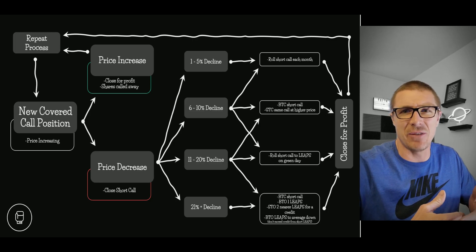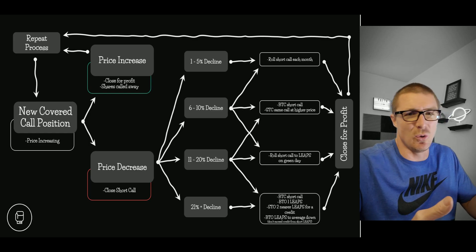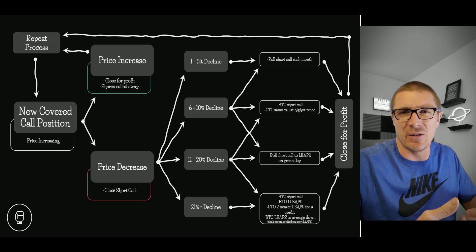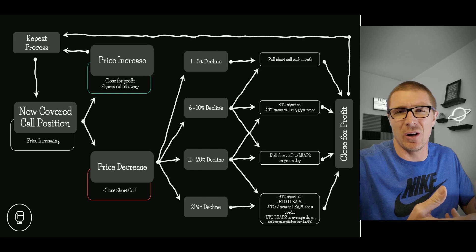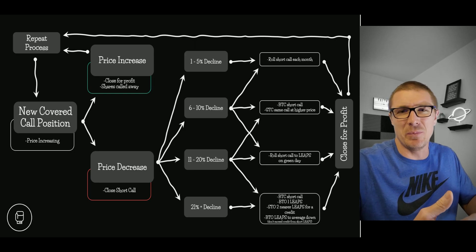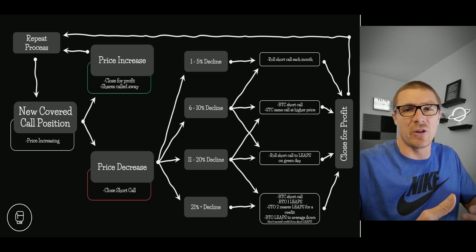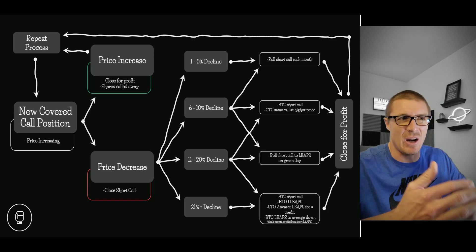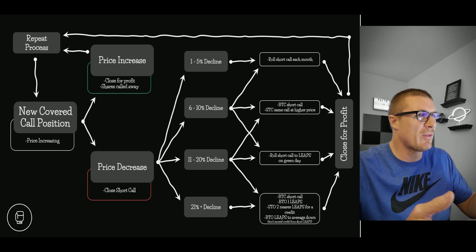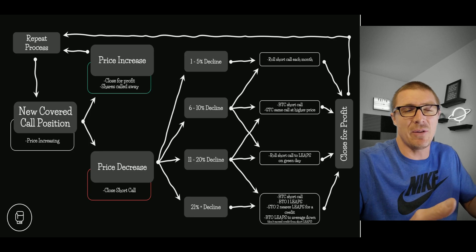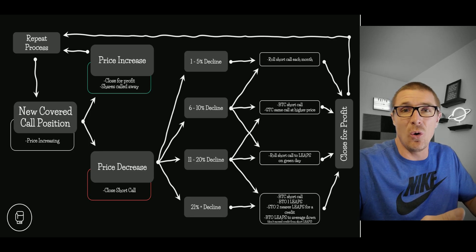We'll discuss each of these steps in the slides that follow. You're going to start with a new covered call position — you want price on the chart to be increasing, you want a bullish stock. I should also say I usually trade this on dividend kings and dividend aristocrats. I don't trade it on Peloton, GameStop, or meme stocks. I trade it on companies I'd want to hold long term, and they also pay a dividend — that's a nice bonus. With a new covered call, you want price increasing, and if price goes up you should be able to close the position for a profit.